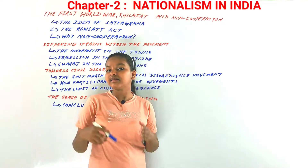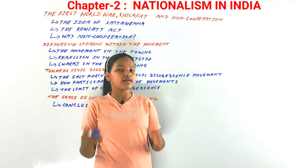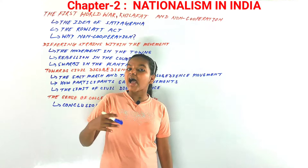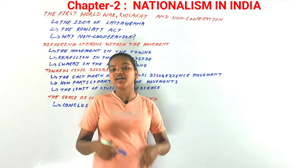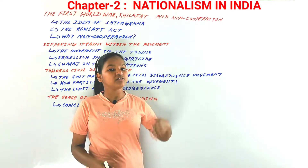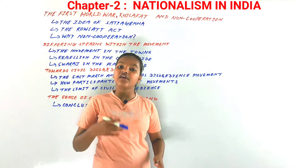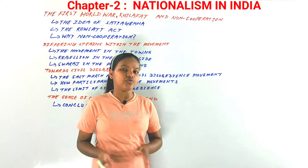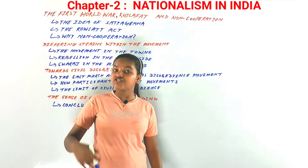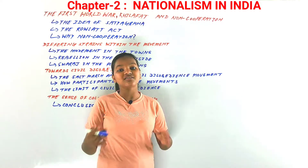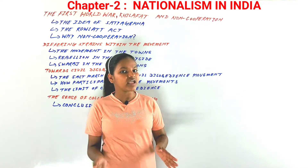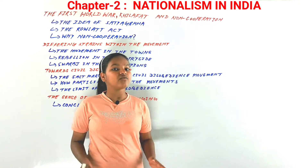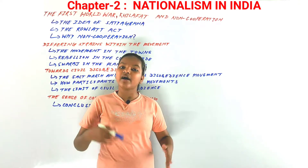In the last chapter we discussed nationalism in Europe. We saw how the ideas of nationalism arose in Europe and how through nationalism people got to know who they were, their identity and the nation they belonged to. Because of nationalism, many nation states were created. We discussed about Germany and Italy.